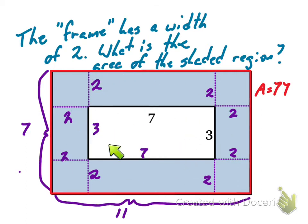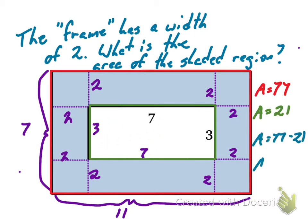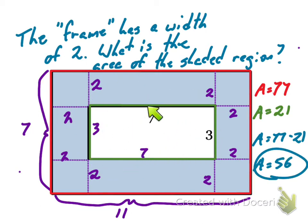Now I just need to find the area of the inside rectangle — the hole in the shape. That area is seven times three. What is seven times three? That's twenty-one. So I just need to subtract: seventy-seven minus twenty-one. The area of the shaded frame is fifty-six.